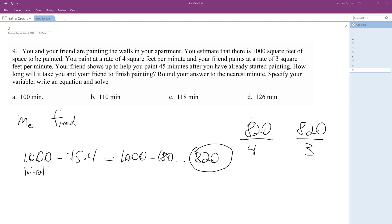820 divided by 4 which is 205. So this is you, so 1 over 205. And then 820 divided by 3, I'm pretty sure that's not going to be a nice number. That's okay.